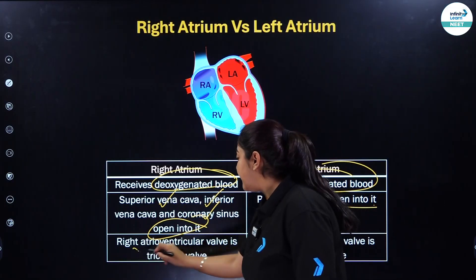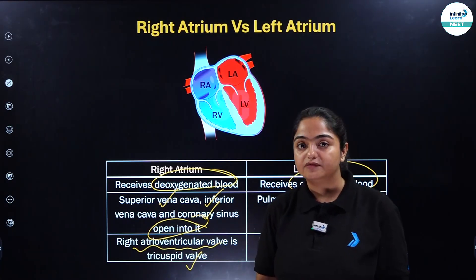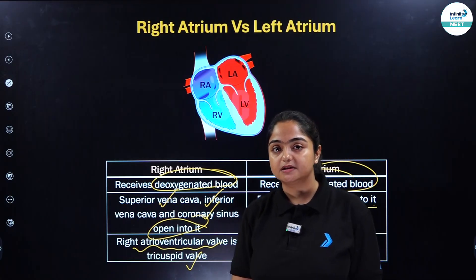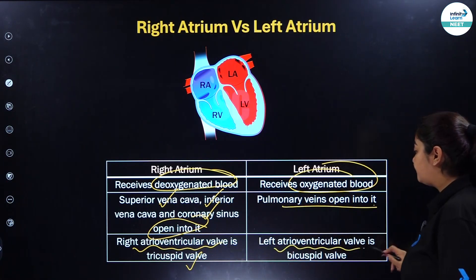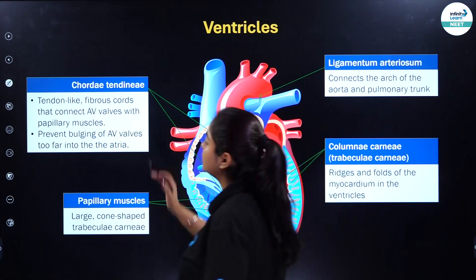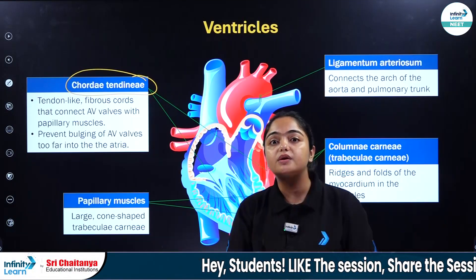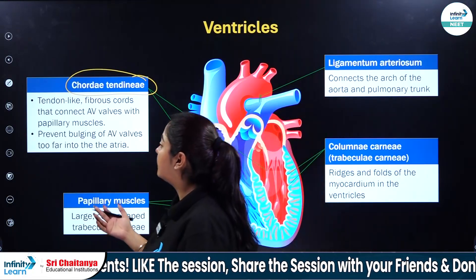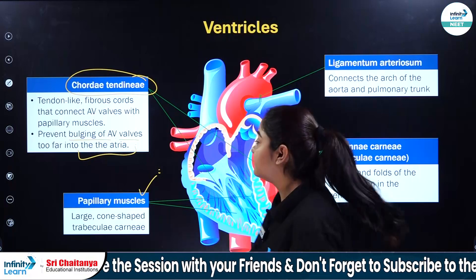The right atrioventricular valve is the tricuspid valve. A valve is basically responsible for preventing the backflow of blood. Between right atrium and right ventricle we have the tricuspid valve; between left atrium and left ventricle we have the bicuspid valve, also known as the mitral valve. We also have chordae tendinae — papillary muscles which hold on to the valve to prevent backflow of blood. It prevents bulging of the AV valve too far into the atria. Papillary muscles also contribute to this function.